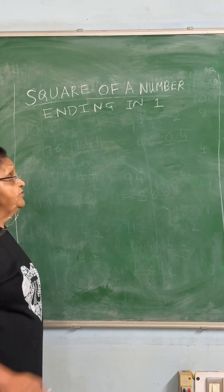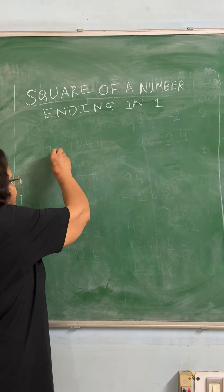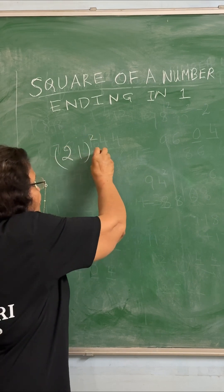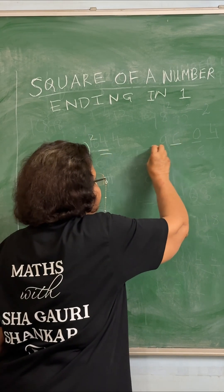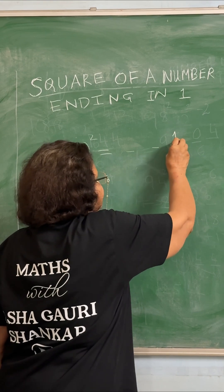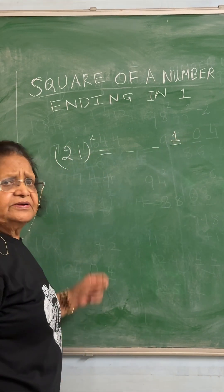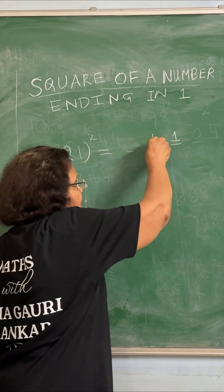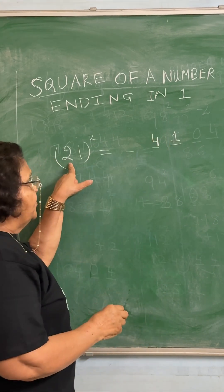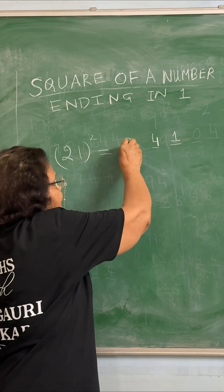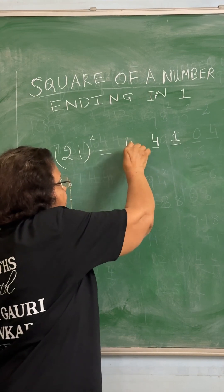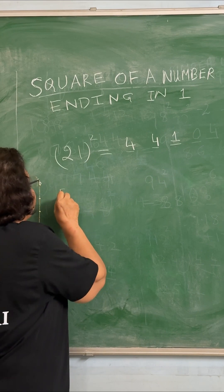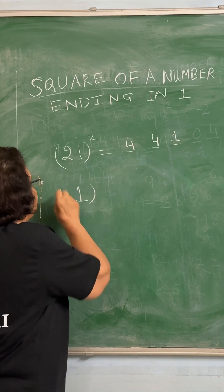Finally, the square of a number which ends in 1. Supposing we want to find out 21 squared. We are going to write it as 1-digit numbers. We will write 1 as it is. We will double this 2 — so 2 plus 2 is 4 — and we will square 2, so 2 into 2 is again 4. So the square of 21 is 441.